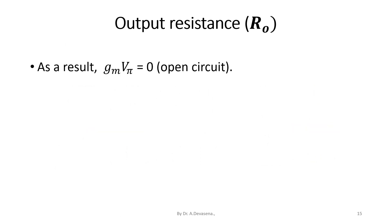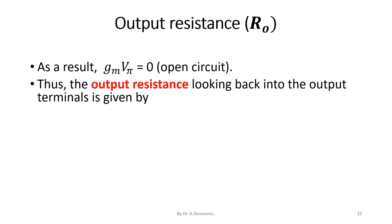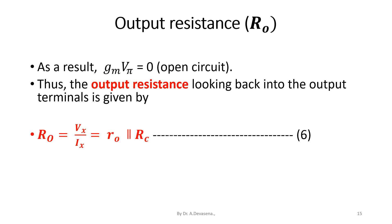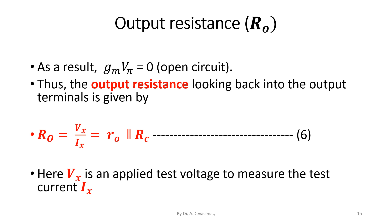As a result, Gm V suffix pi is equal to 0, meaning the current source Gm V suffix pi is considered to be an open circuit. Thus, the output resistance looking back into the output terminals is given by R0 equal to V suffix x divided by I suffix x. This is nothing but the parallel combination of R0 parallel R suffix C. Here, V suffix x is an applied test voltage in order to measure the test current I suffix x.